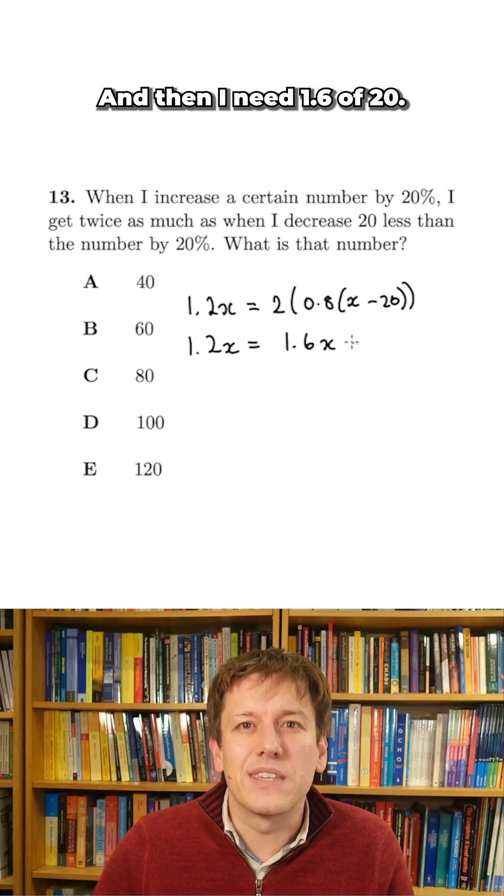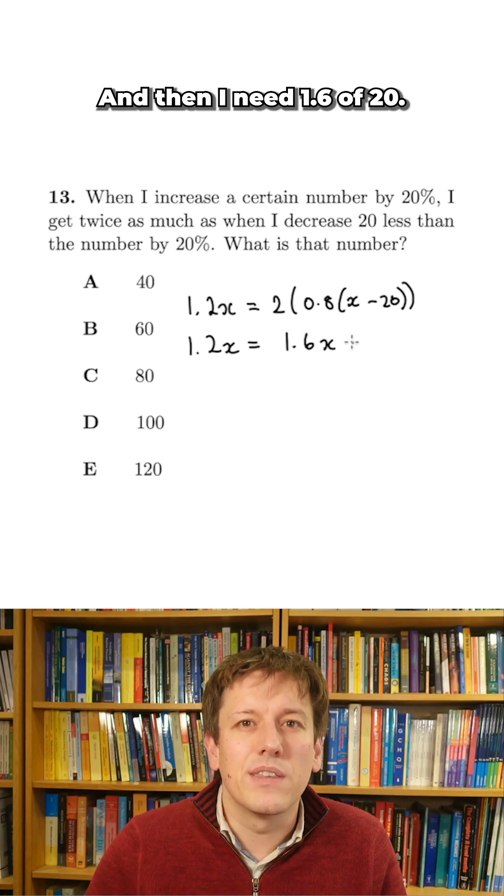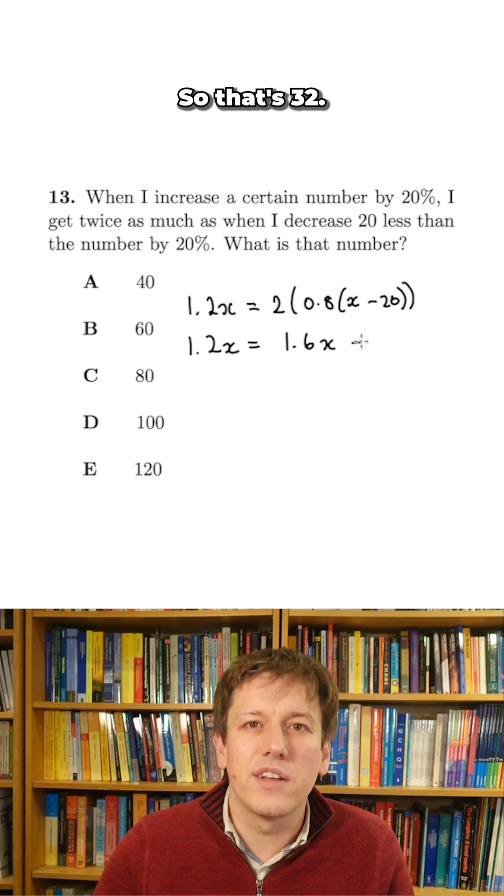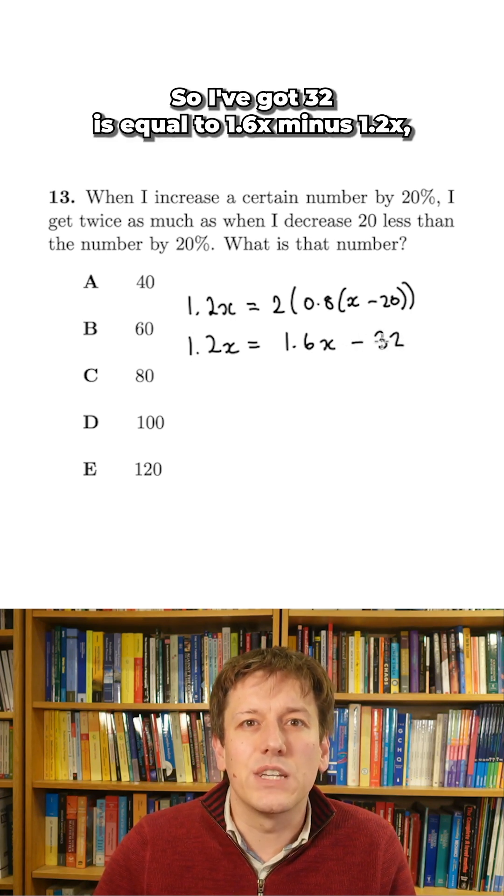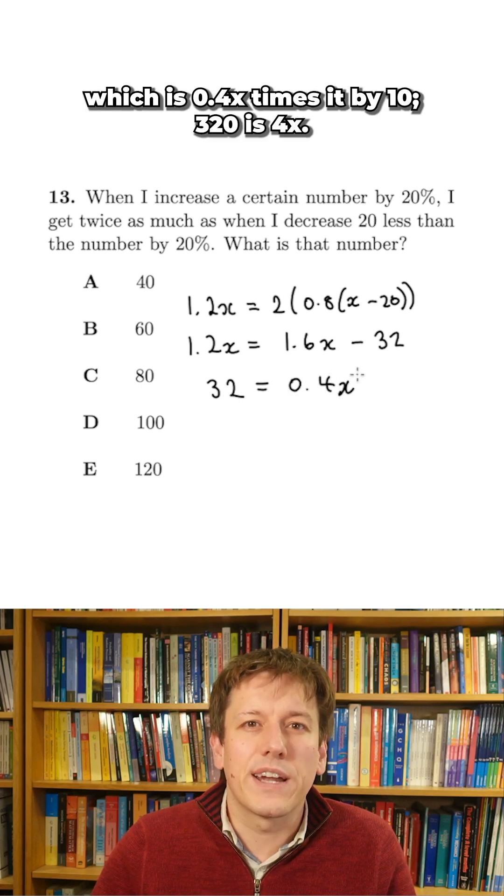And then I need 1.6 of 20. 1.6 times 2 is 3.2. So that's 32. So I've got 32 is equal to 1.6x minus 1.2x, which is 0.4x.